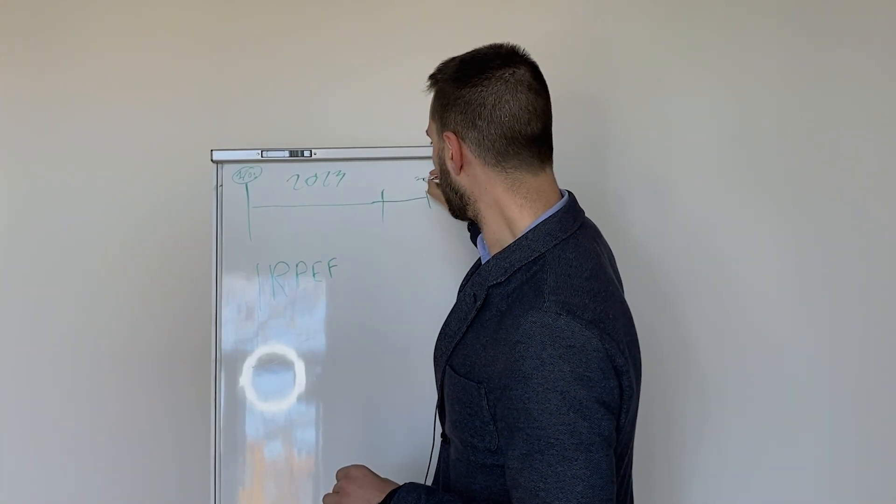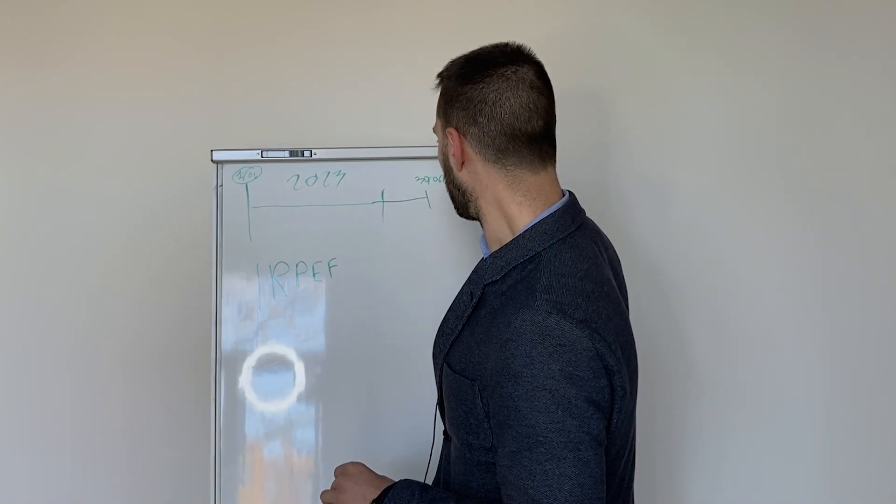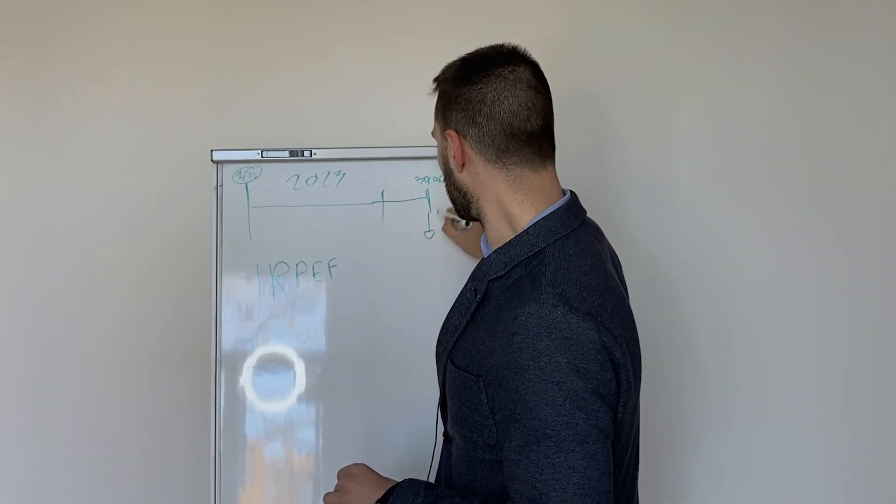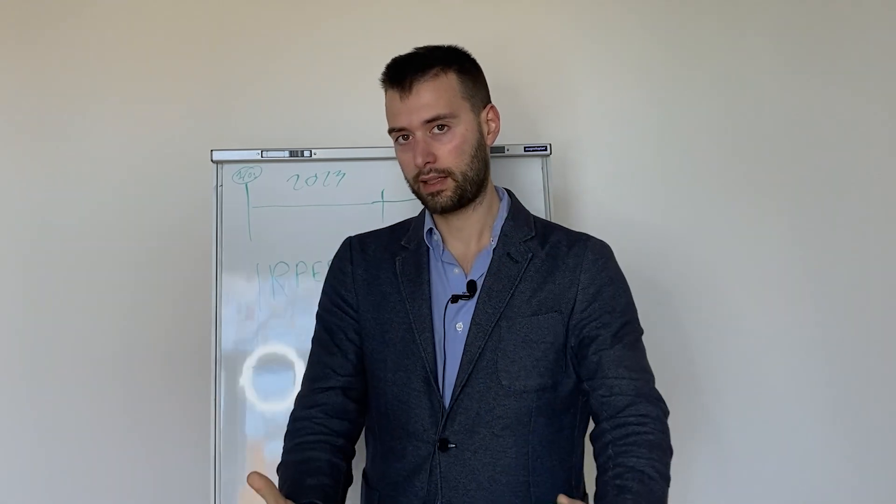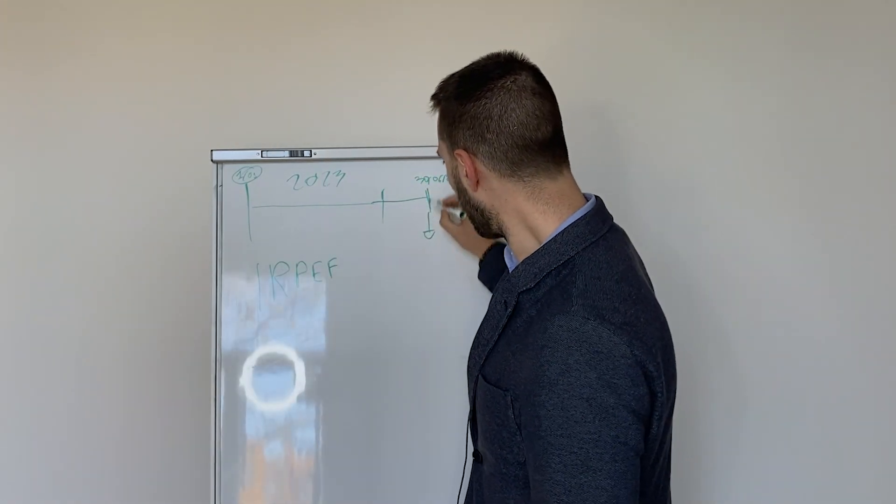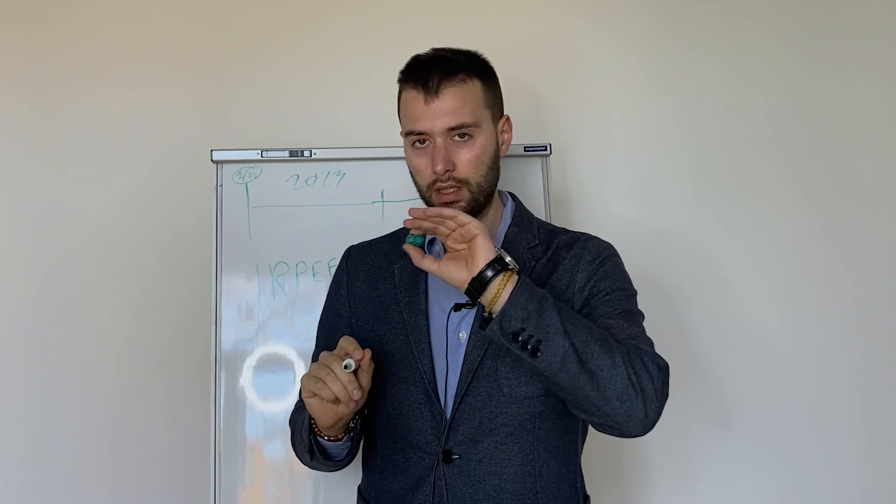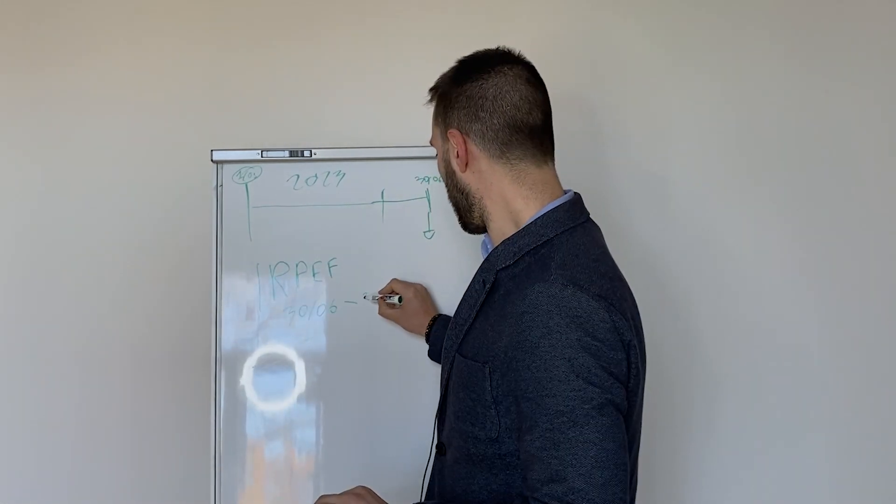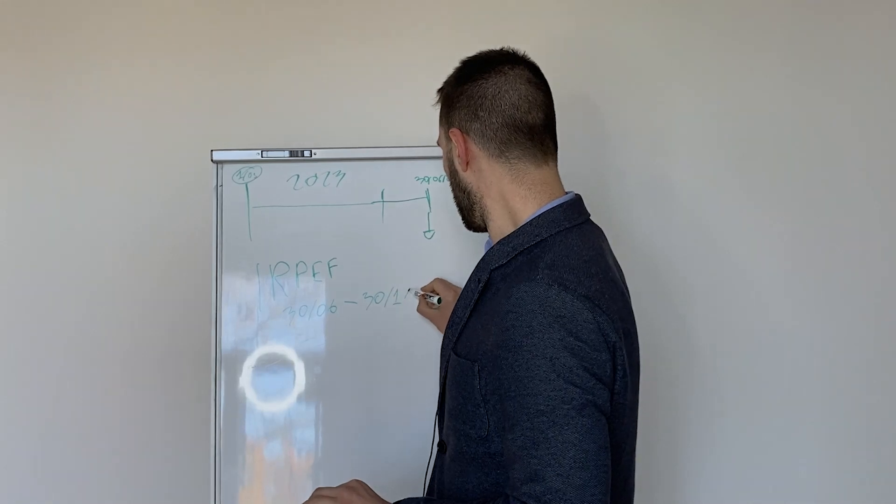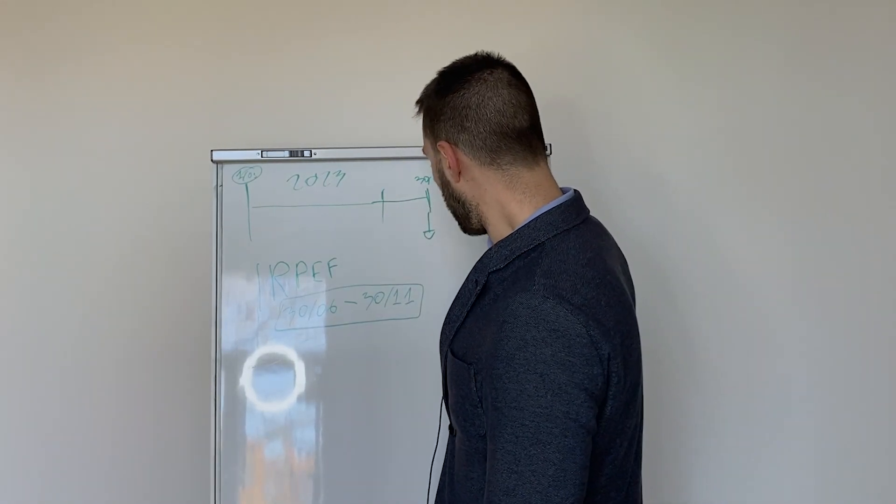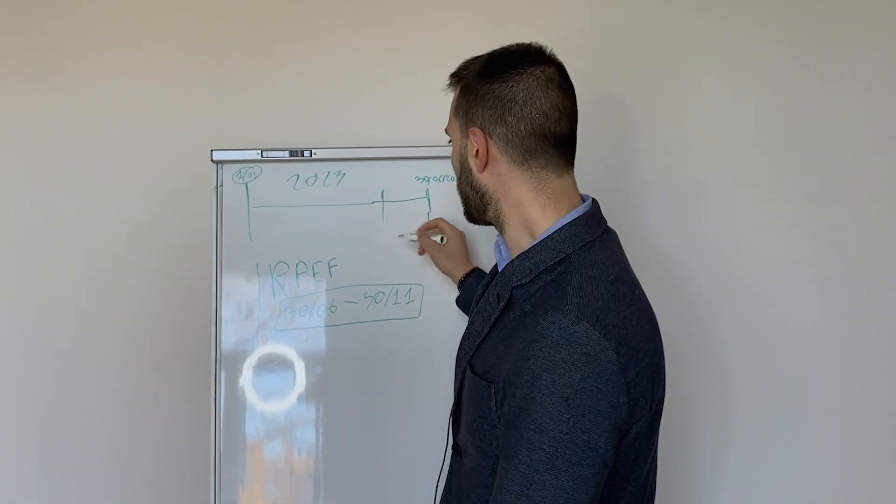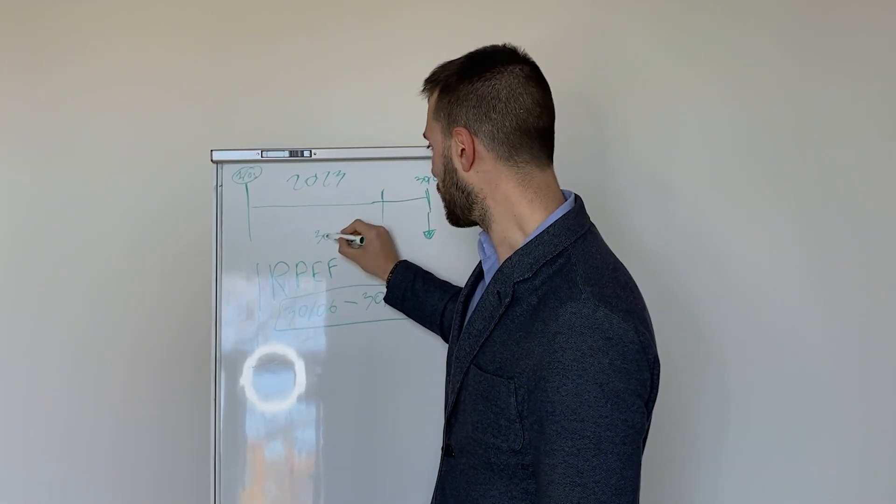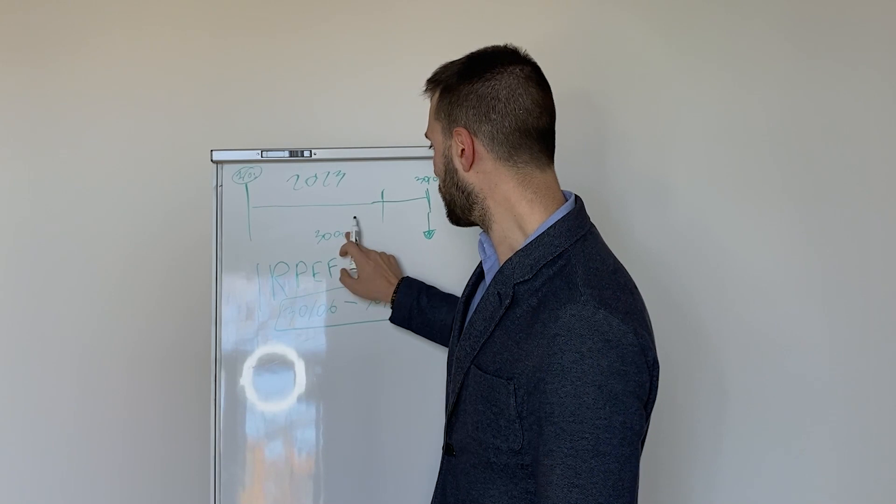You will declare by the 30th of June 2024 the taxes. So you will pay the taxes the 30th of June. Please take notes of those two dates: 30th of June and 30th of November. So what happens on the 30th of June?